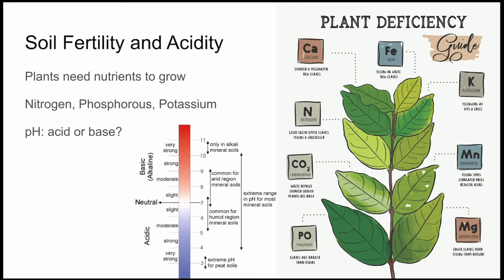The pH of a soil affects how accessible certain nutrients are, so different plants will have preferences for what types of soil they'll want to live in. For example, the plant hydrangeas will actually change their color depending on what soil they're in.